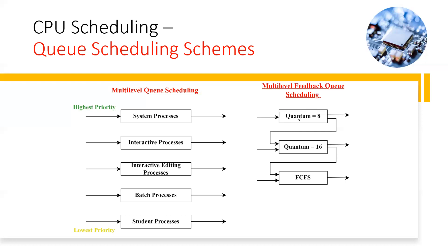For example, a time quantum is defined for a particular scenario — say 8 units of time. Normally, round-robin is used. Then, in the first round defined by the time quantum, if some processes have completed in the first round and there are still some remaining processes, what will be done is round-robin is applied again with the time quantum doubled.